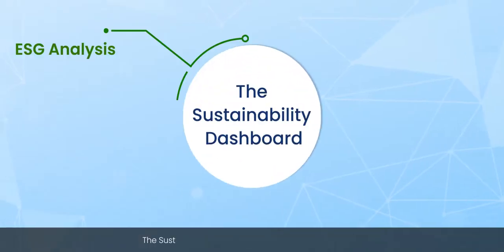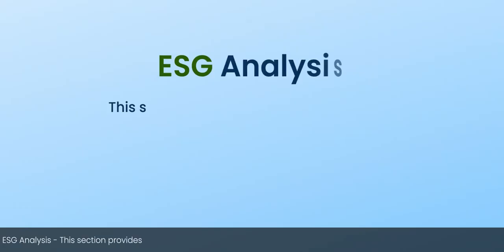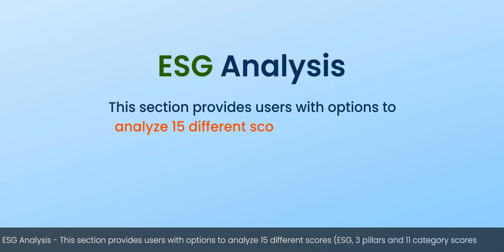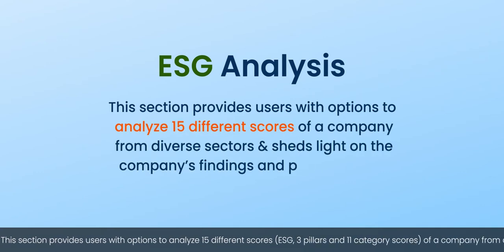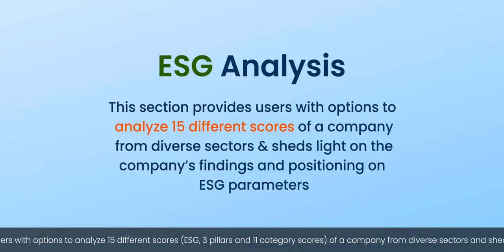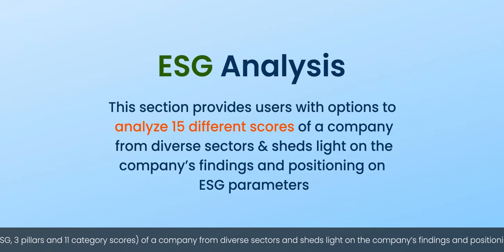The Sustainability Dashboard has four major components. The ESG Analysis section provides users with options to analyze 15 different scores of a company from diverse sectors, and sheds light on the company's findings and positioning on ESG parameters.